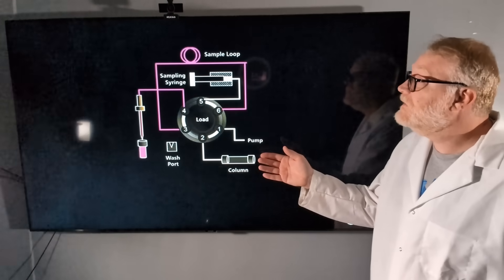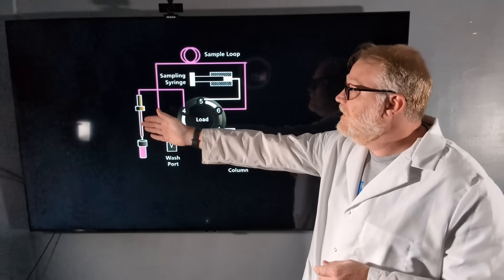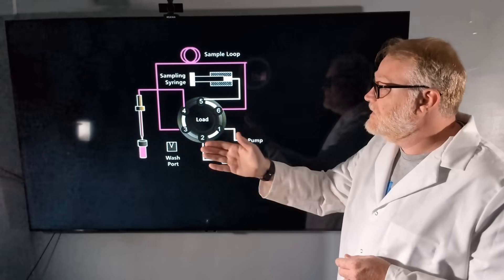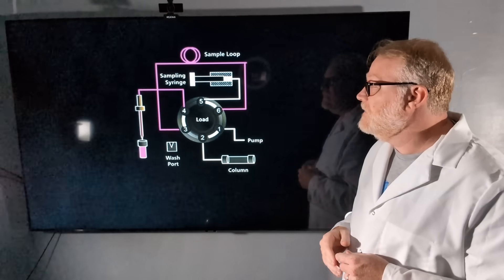Here's an example of our pull-to-fill autosampler. Here we have our sample vial, our needle, our sample loop, sampling syringe, our injection valve is in the load position, our pump, and our column.